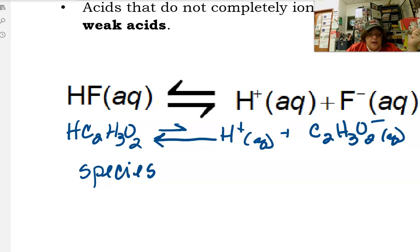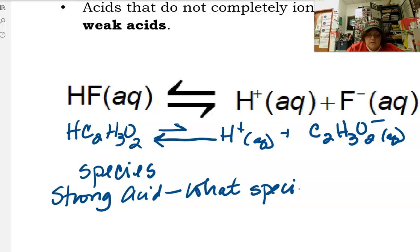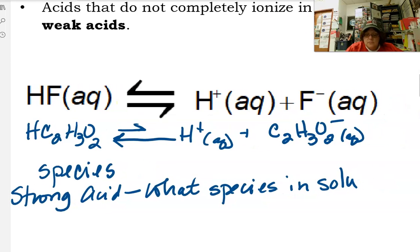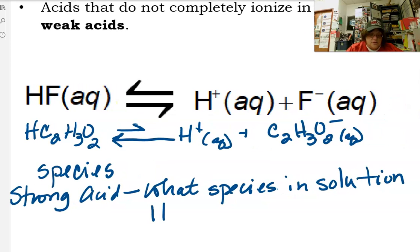You might have a question about a strong acid. What species would you see in solution? And the answer would be hydrogen and nitrate or hydrogen and sulfate or hydrogen and iodide or bromide or what have you.